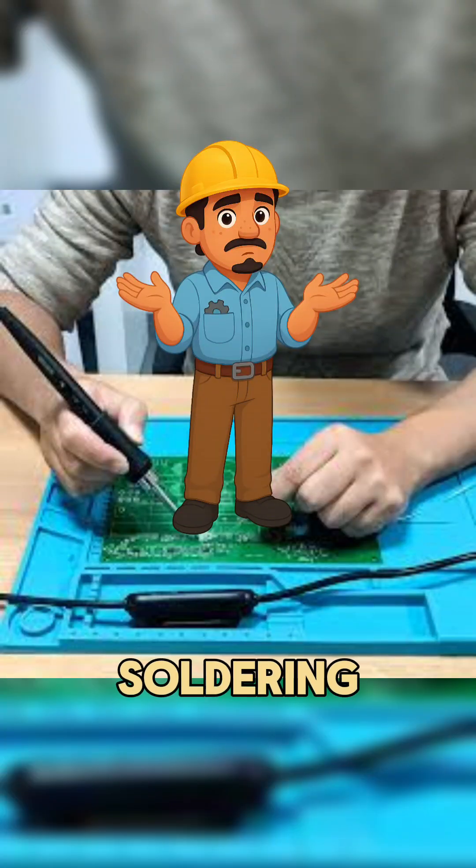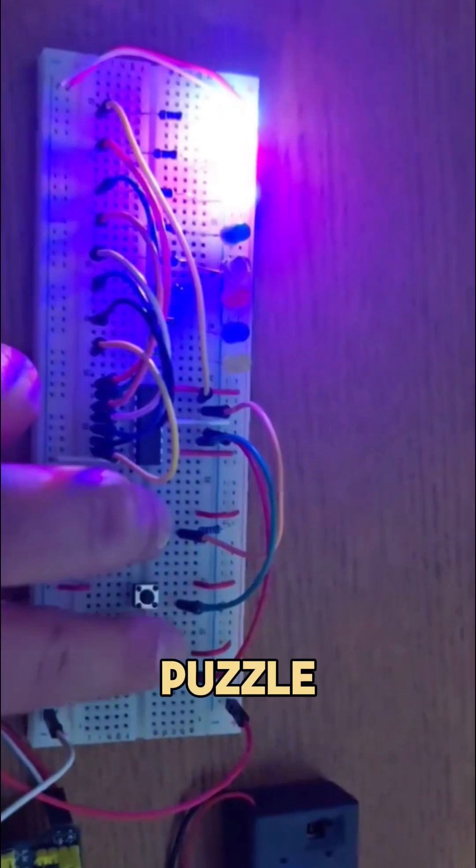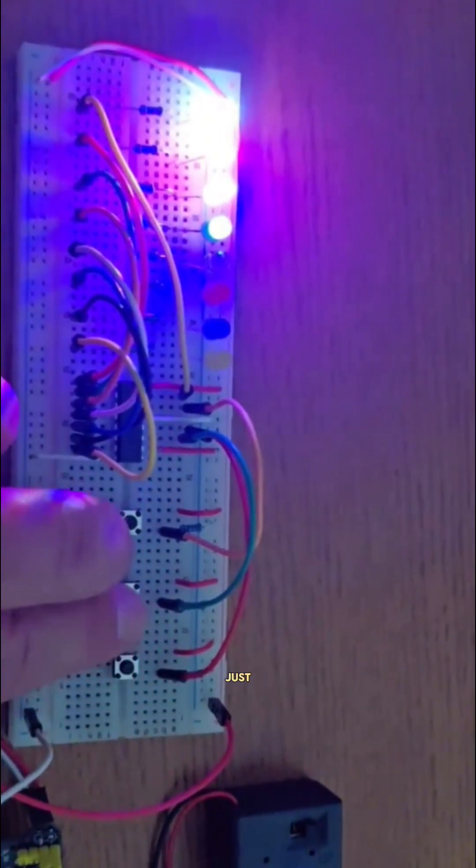Want to build circuits without soldering? A breadboard lets you snap in LEDs and resistors like a puzzle, and Ohm's Law keeps them glowing just right.